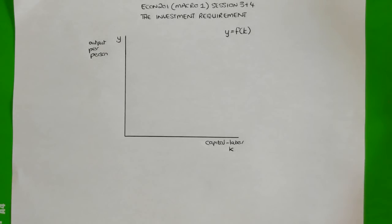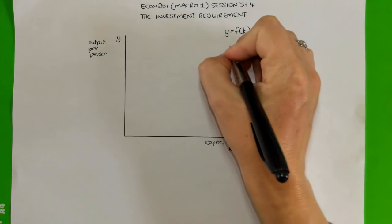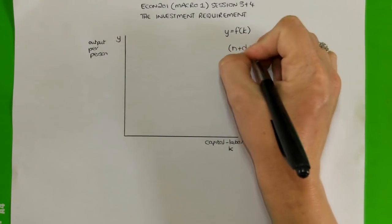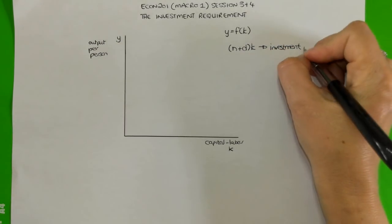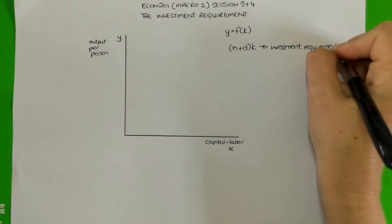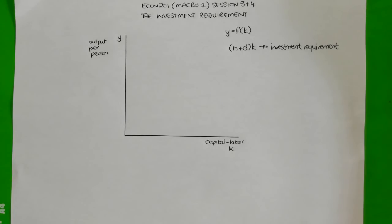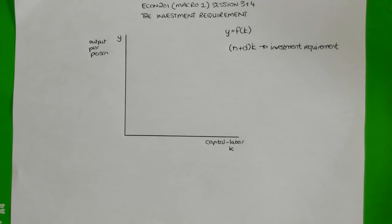Those two important things are, firstly, the population growth rate, which we will need to consider, and the depreciation rate of capital. The population growth rate is shown by the lowercase n — that's telling us the percentage by which the population changes each year. Lowercase d is the depreciation rate of capital. When we talk about depreciation, we're really talking about the fact that over time, capital equipment loses value. It becomes obsolete in some cases, and in other cases, because it's physical machinery, it wears out over time and becomes old and broken and needs to be replaced.